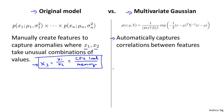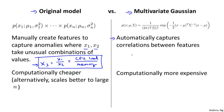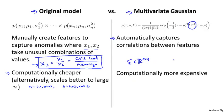The original model has some other significant advantages too. One huge advantage is that it is computationally cheaper — it scales better to very large values of n. Even if n were 10,000 or 100,000, the original model will usually work just fine. In contrast, for the multivariate Gaussian model, we need to compute the inverse of the matrix sigma, which is an n by n matrix. Computing the inverse of a 100,000 by 100,000 matrix is very computationally expensive, so the multivariate Gaussian model scales less well to large values of n.